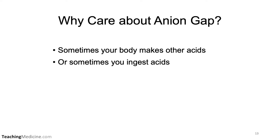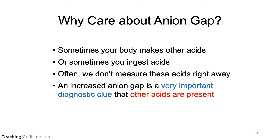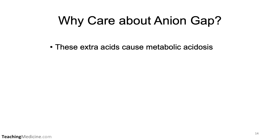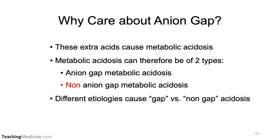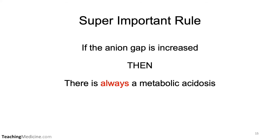Is the anion gap important? The answer is yes, it's very important. Sometimes your body makes other acids or you ingest other acids, and we don't necessarily measure these acids right away. Therefore, an increased anion gap is a very important diagnostic clue that other acids are present in the body. These extra acids cause a metabolic acidosis, and therefore a metabolic acidosis can be of two types: anion gap metabolic acidosis and non-anion gap metabolic acidosis. One super important rule is that if the anion gap is increased, then there is always a metabolic acidosis present.